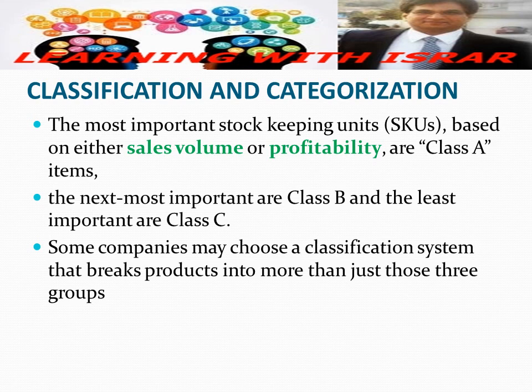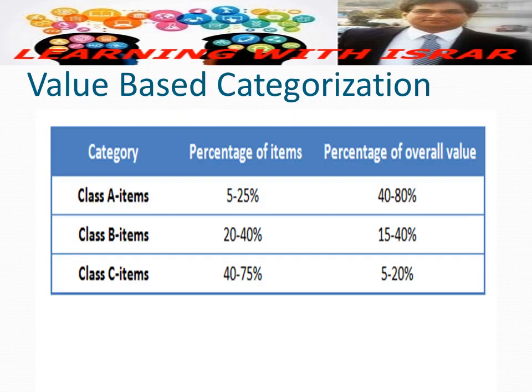Here are some benchmark values on which you can base your inventory categorization. Class A items represent about 5 to 25 percent of items but account for 40 to 80 percent of overall value. Class B represents about 20 to 40 percent of items and 15 to 40 percent of overall value. Class C represents 40 to 75 percent of items but only 5 to 20 percent of the overall value.